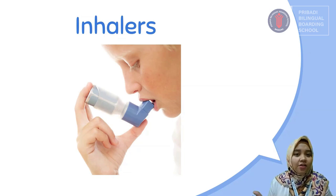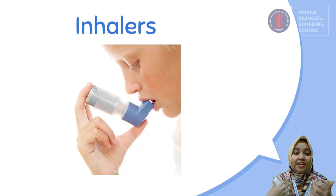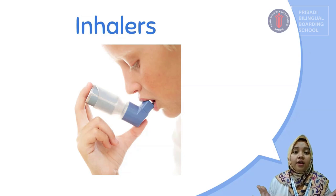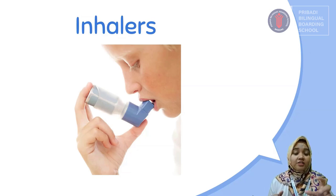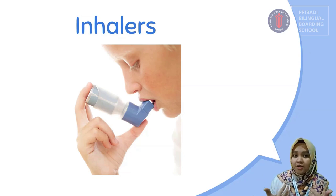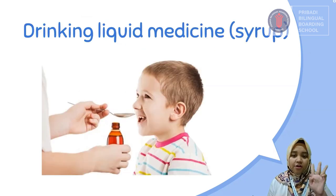The second type is what is called inhalers. Can you repeat after me: inhalers. Good job! Do you know what inhalers are for? They are for people who have asthma. So if you, your friends, or your family have asthma, they probably have this kind of medicine. With inhalers, we inhale the air from the inhaler to help us breathe better.